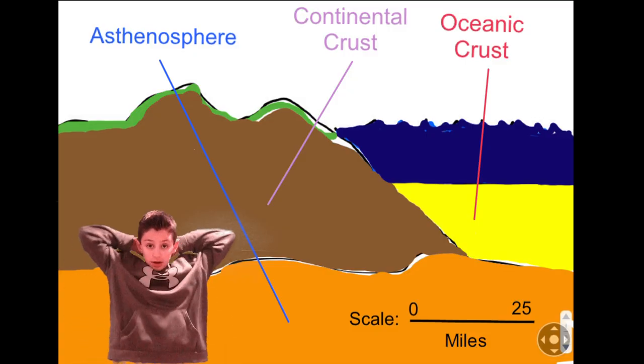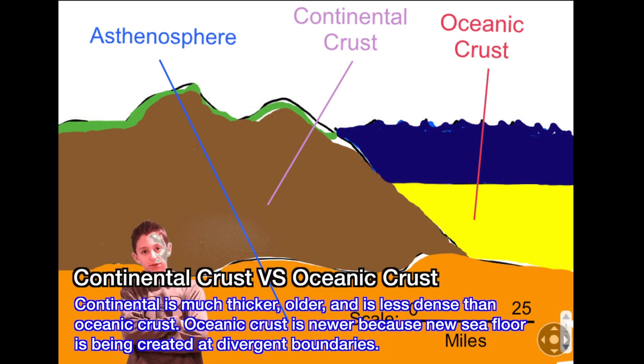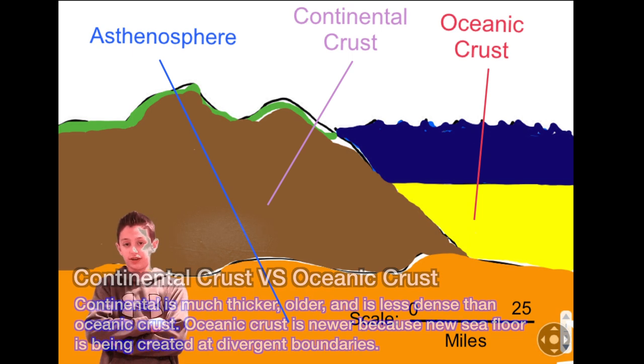There are two types of crust, continental crust and oceanic crust. Continental crust is much thicker than oceanic crust, but it is less dense. Oceanic crust is also much darker than continental crust, and is composed mainly of basalt rocks. New ocean sea floor is often made in oceanic crust, and that's the reason that it is also much younger than continental crust.